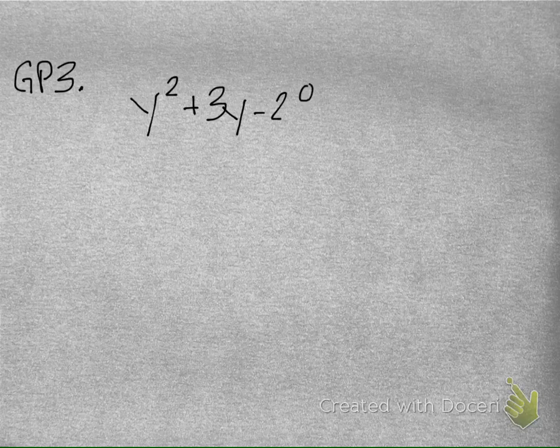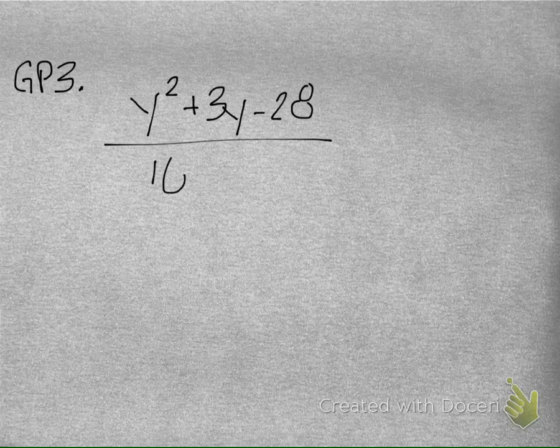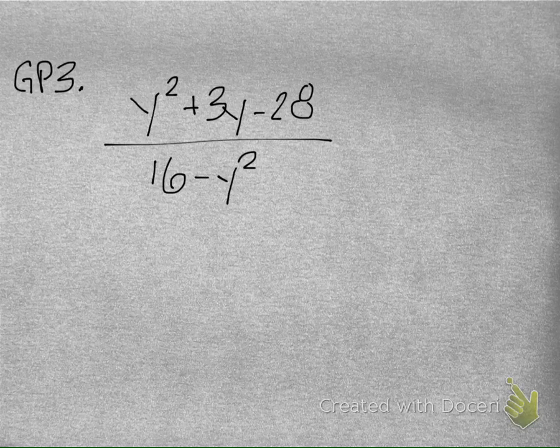Here's GP number 3. I'd like you to take a moment, please, and try to do one of these opposite type problems. Here's y squared plus 3y minus 28 over 16 minus y squared. Take a moment, please, try to factor that out so you can cancel stuff out. And by canceling it, you're therefore simplifying these rationals.